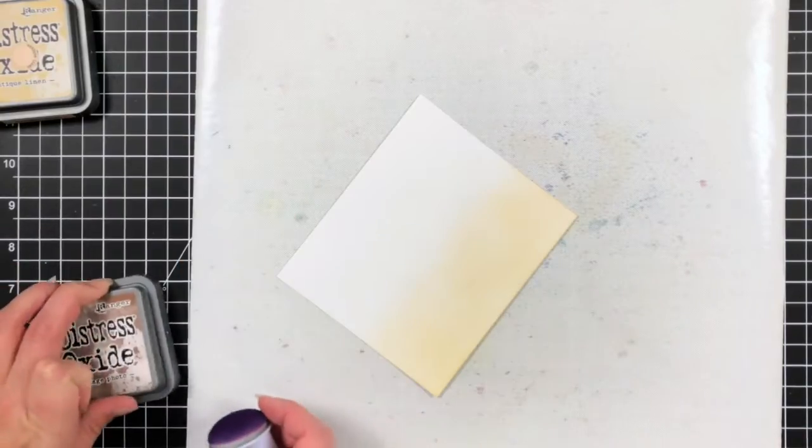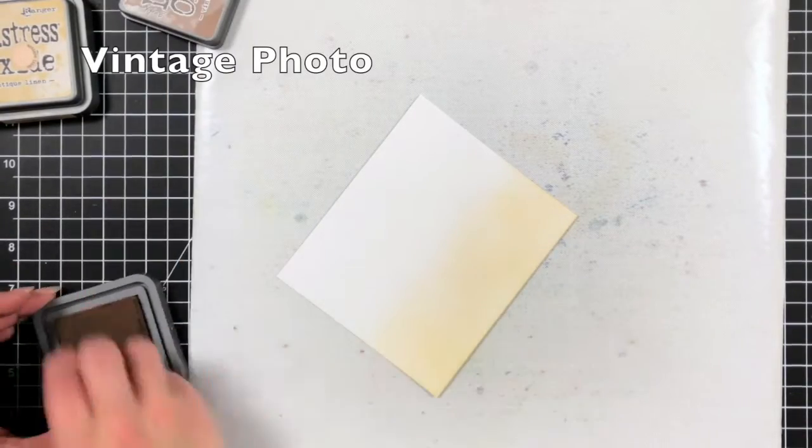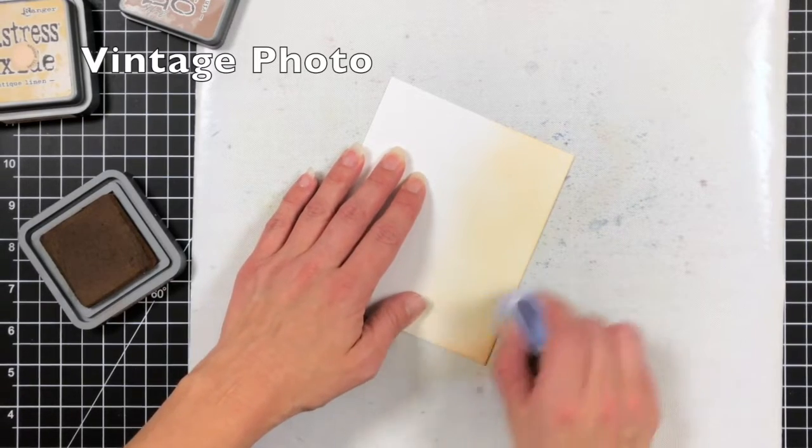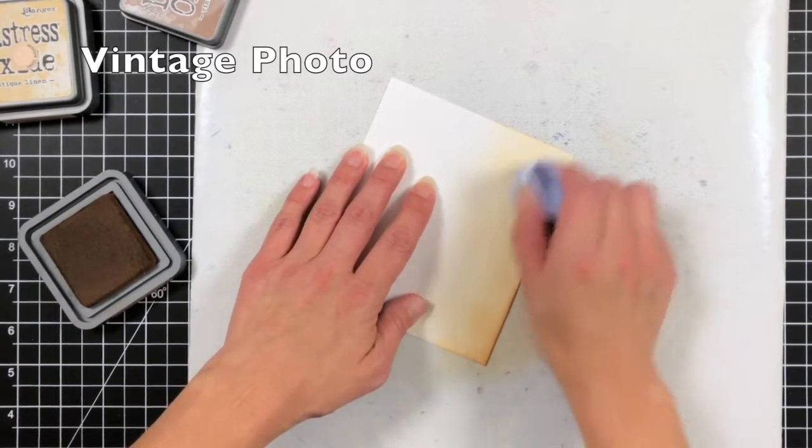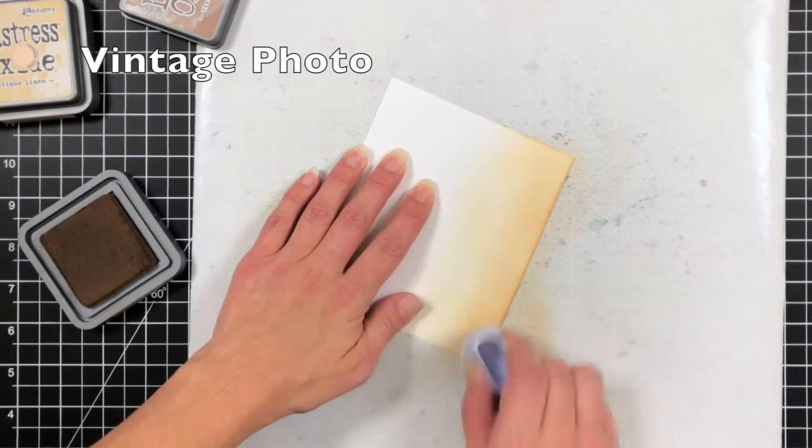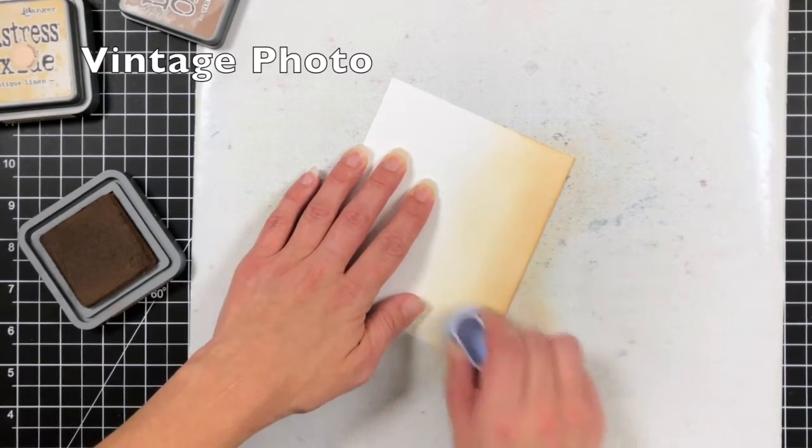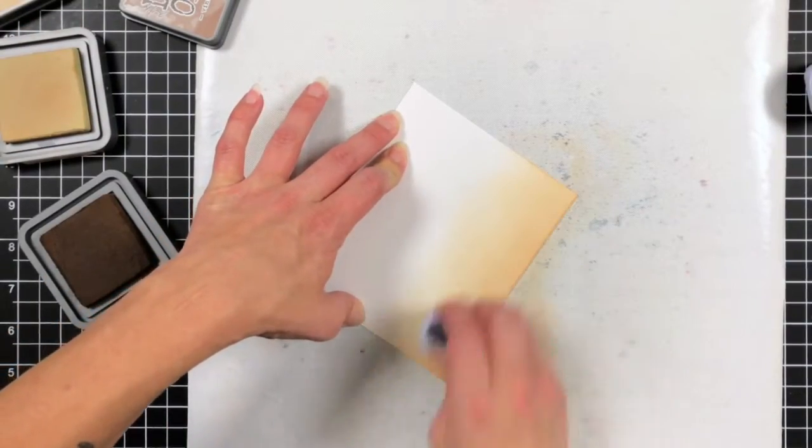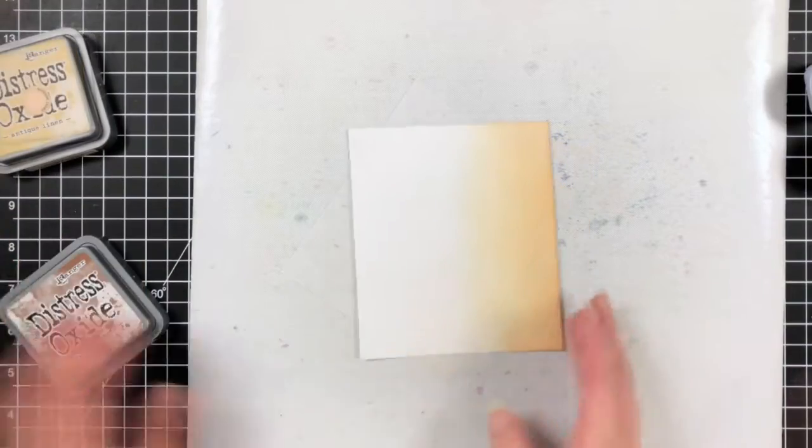So I'm just lightly laying down that antique linen and then I'll come in with vintage photo. I'm doing a really light hand at this, I didn't want to go in too far just yet since it is such a darker color. I didn't want it to overpower my antique linen. So I'm just lightly blending that on there in a circular motion and then I'll go back over it with the antique linen.